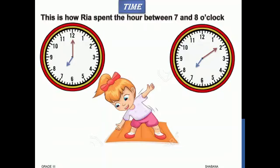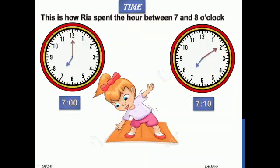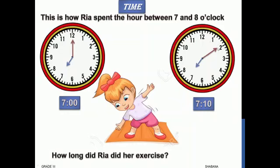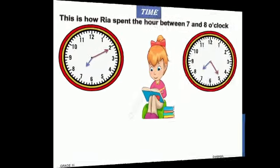From 7 o'clock, the short hand shows 7 and the long hand shows 12, so this is 7 o'clock. From 7 o'clock till 7:10, she is doing exercise. To find how long Rhea did her exercise: the long hand was on 12, and after she completes her exercise it comes to 2, which means 10 minutes. So she did exercise for 10 minutes.